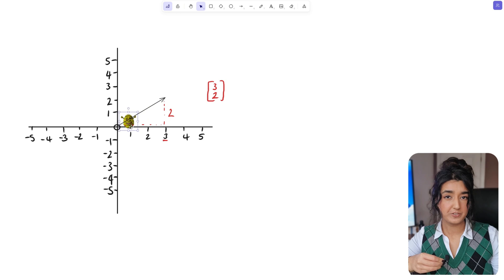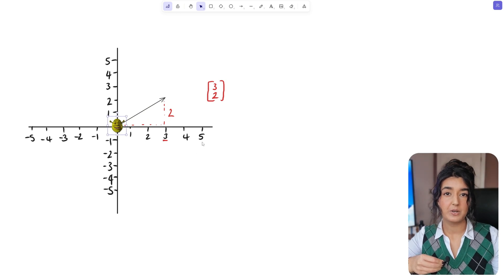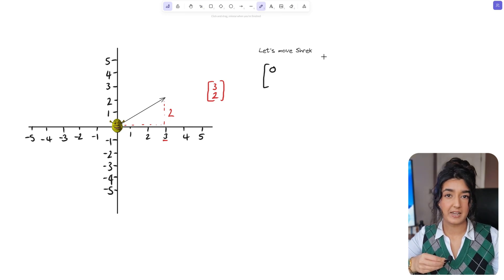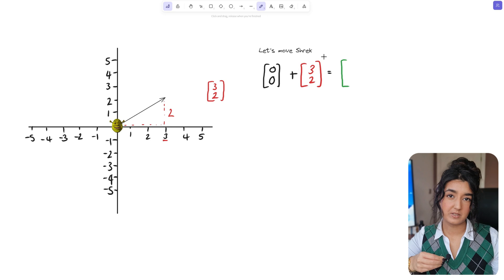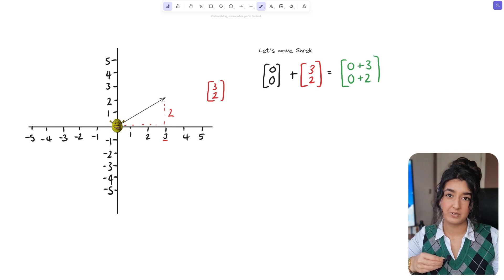Now to actually move Shrek to the new desired position we have to add the new desired position vector to his current position. We can do this by simply adding the x components of both vectors and the y components of both vectors. Since his current starting position is 0, 0 if we add them together we get 3, 2.